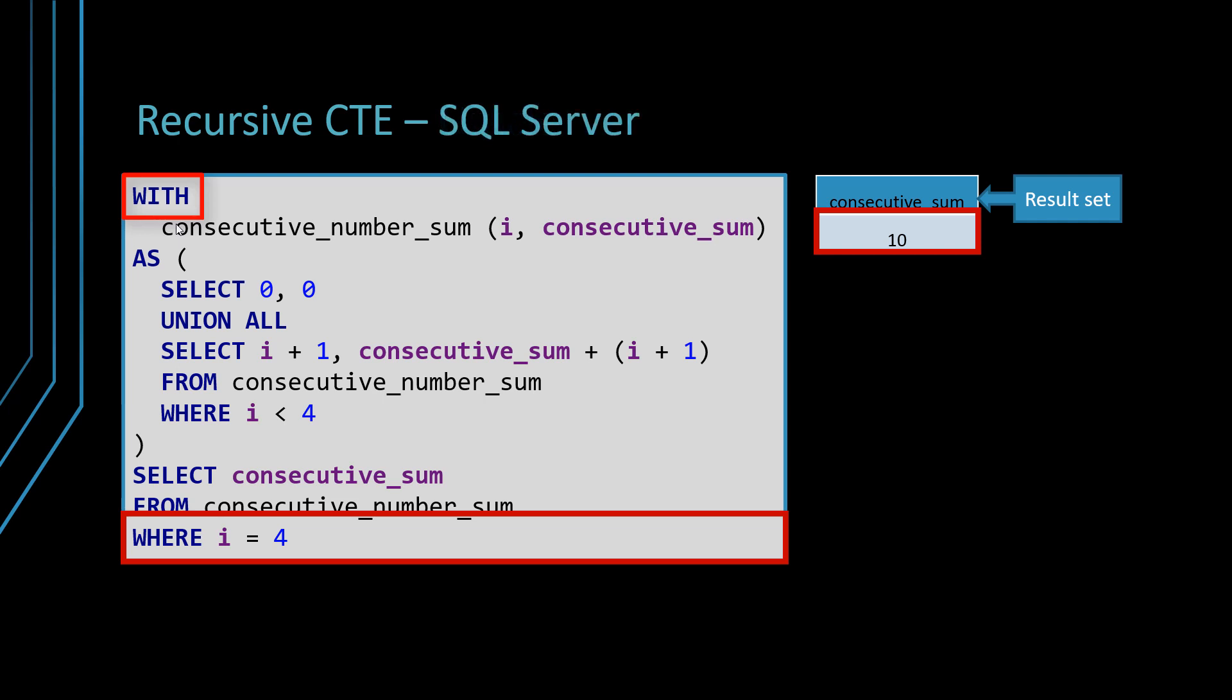And in SQL server, the same like in Oracle, you shouldn't use that recursive keyword. And you can still select zero zero without providing that from dual. But as you can see, the rest of the query stays the same.